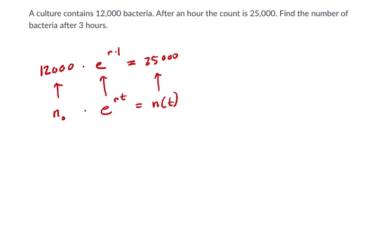So we can solve for r here. If we divide both sides by 12,000, e to the r equals 25,000 over 12,000. Take the natural log of both sides, and r is the natural log of 25,000 over 12,000. That's our rate, and I'm going to use that value of r.